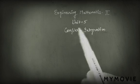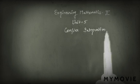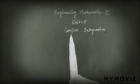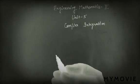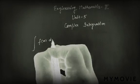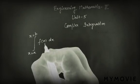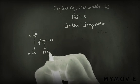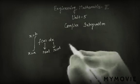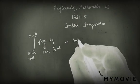Hello everyone. In this lecture I am going to discuss unit 5 complex integration of engineering mathematics second. Generally we have studied normal integration: integral of f(x) dx from x equals a to x equals b. Here x is real, f(x) is real, and the limits are also real. This is our normal integration.